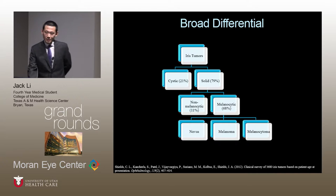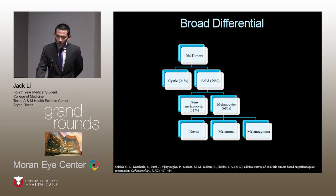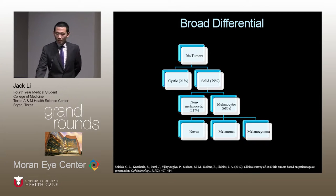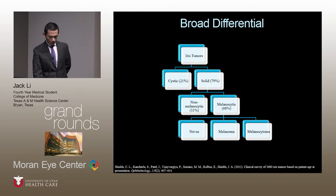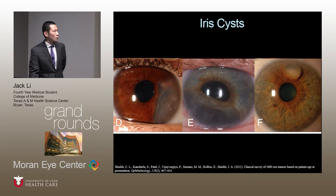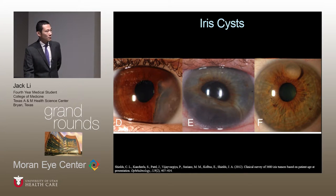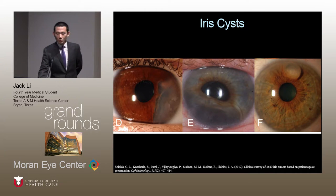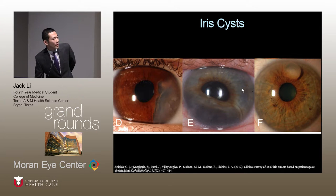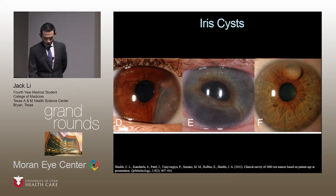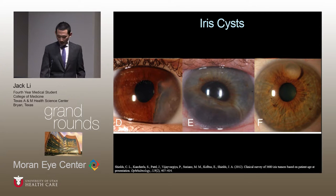To help understand iris tumors, I simplify it down. Iris tumors are typically divided into cystic or solid. Solid tumors comprise a majority, approximately 80% of iris tumors. Cystic lesions are bubble-like, fluid-filled, smooth, and often translucent, as shown in the photos. I present these photos to contrast with our case because ours does not look anything like a cyst.